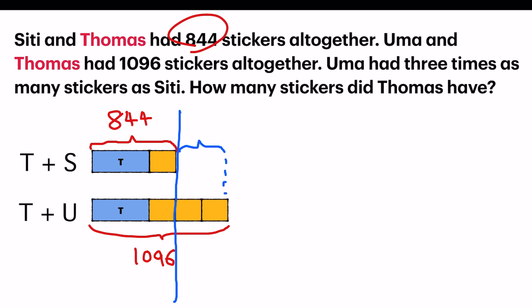which is two orange units. So I will take 1096, subtract 844. That gives me 252.